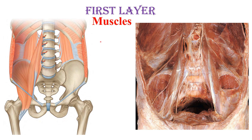That is the first layer of the abdominal cavity coming from posterior to anterior. This is the posterior abdominal wall muscles with no structures on them — that is the base where all the contents will be lying on.